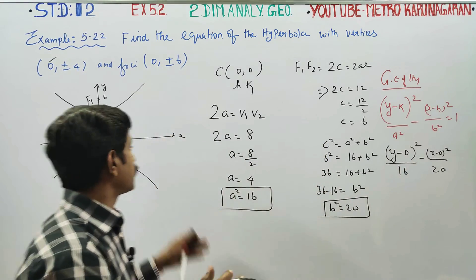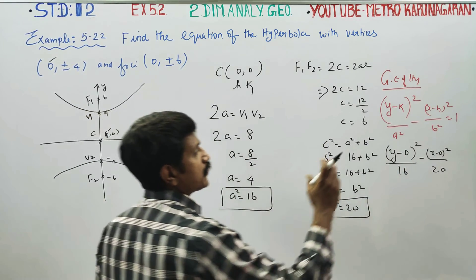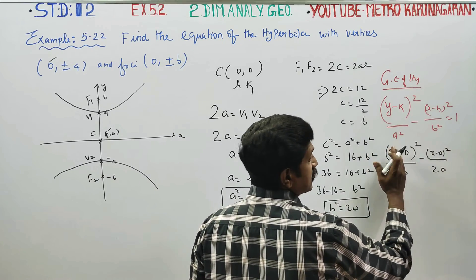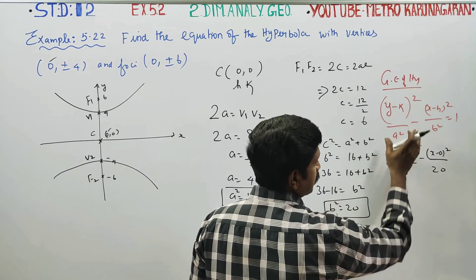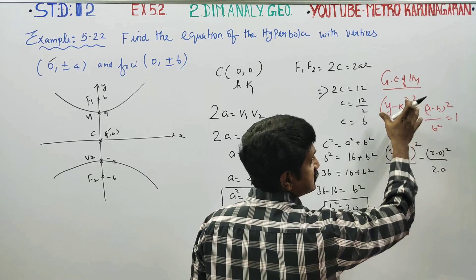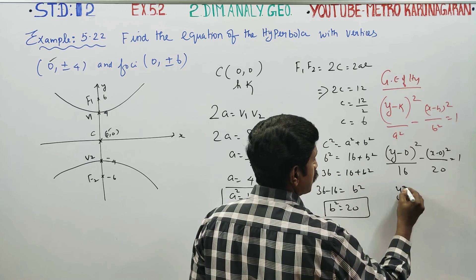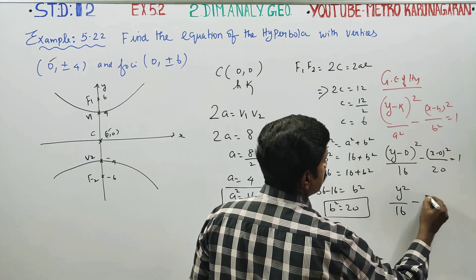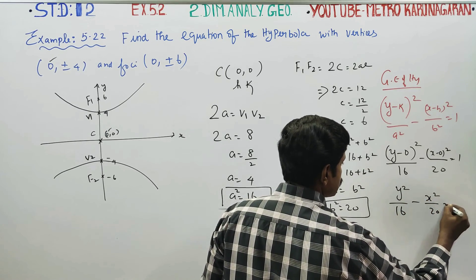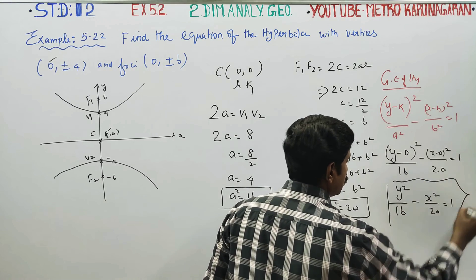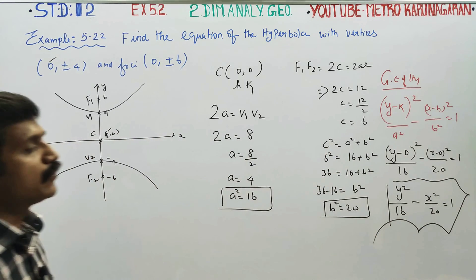The y-axis is first, so y comes first. Y square by 16 minus x square by 20 is equal to 1 will be your equation of hyperbola.